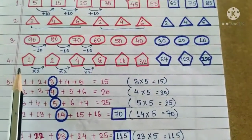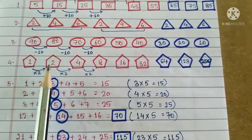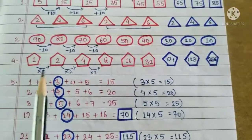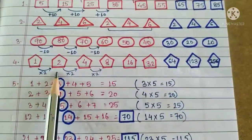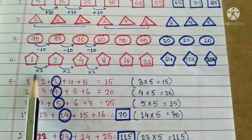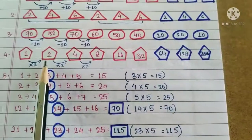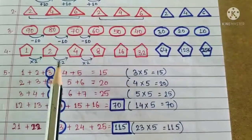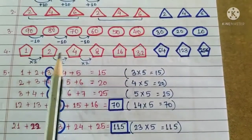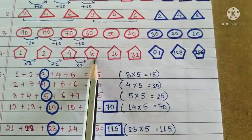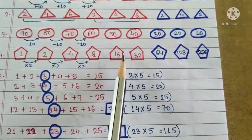Similarly, question 4: 1, 2, 4, 8, 16, 32. Here, if you will see, you will find the pattern as 1 into 2 is 2. 2 into 2 is 4. We are obtaining the consecutive number by multiplying 2 with the previous number. So 4 into 2 is 8. 8 into 2 is 16. 16 into 2 is 32.